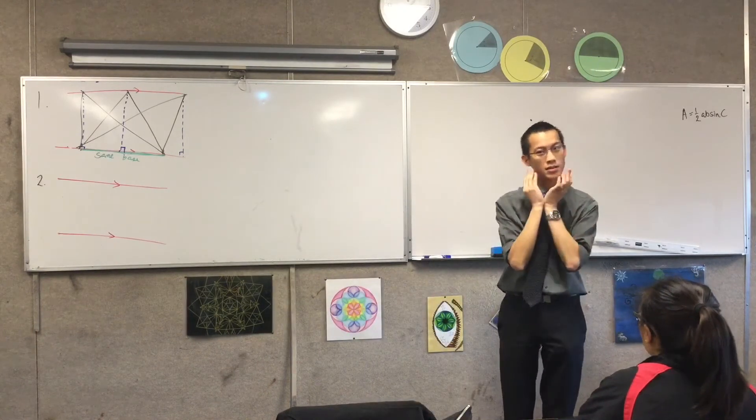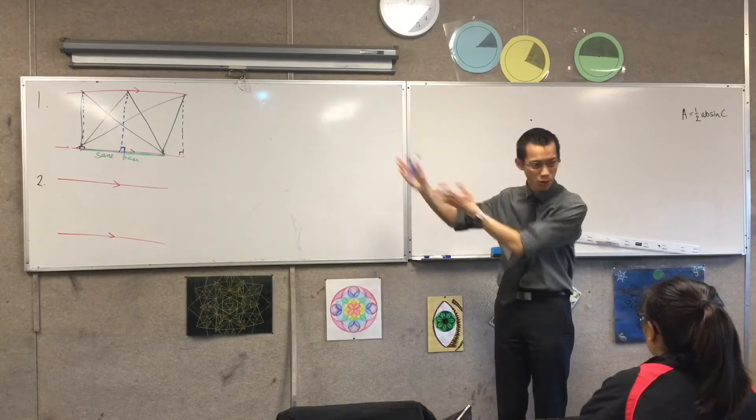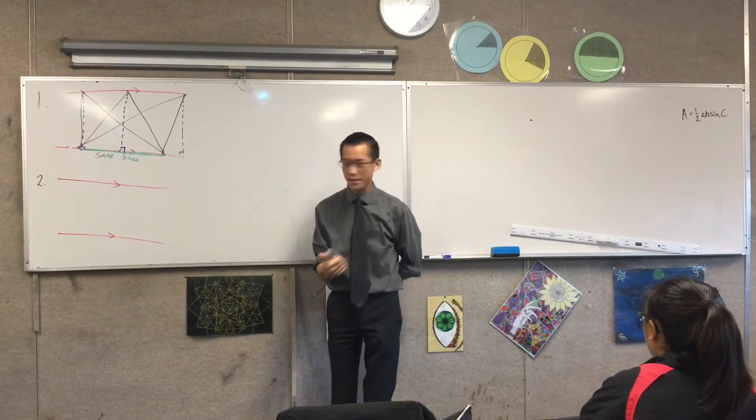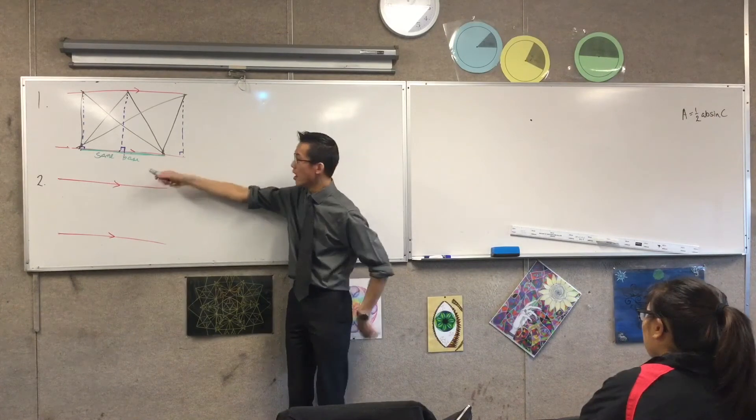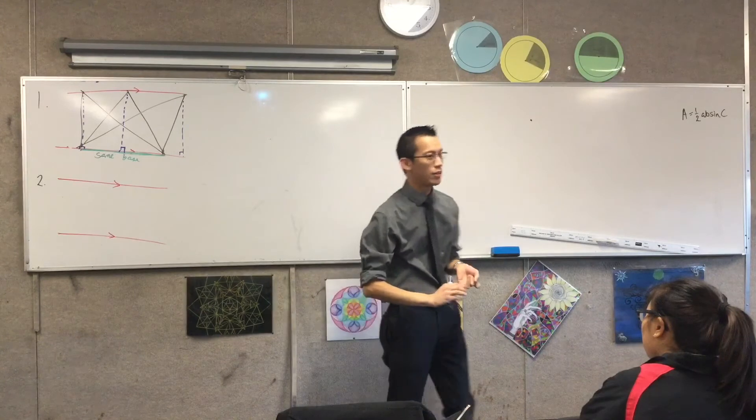So, here comes the wording of the property. I'll say it once and then I'll say it again slowly so you can write it down if you'd like, but the important thing is the diagram. Triangles on the same base, triangles on the same base, between parallel lines are equal in area. That's it. It's not crazy.